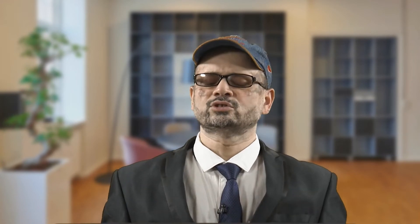As we discussed, with a moving heat source the distance of any point changes with respect to the tip of the electrode. For establishment of the quasi-stationary state, we shift the origin so that the tip of the electrode can be considered to be located at a fixed distance from the point under consideration.